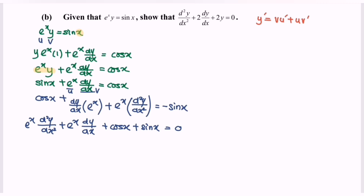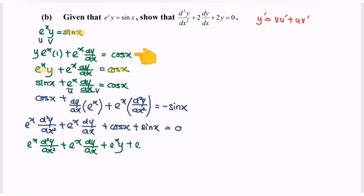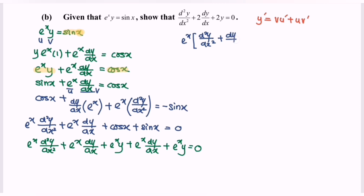Kindly substitute the expressions for cos(x) and sin(x). So, e^x times the second derivative, plus e^x times the first derivative, plus cos(x) — where cos(x) is e^x·y plus e^x·(dy/dx) — plus sin(x), which is e^x·y, equals 0. We factor out e^x to get: e^x times [second derivative plus dy/dx plus y plus dy/dx plus y] equals 0.